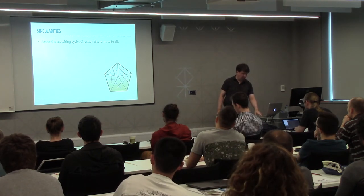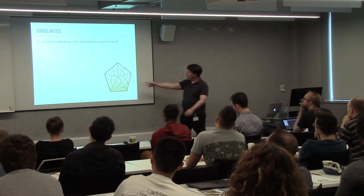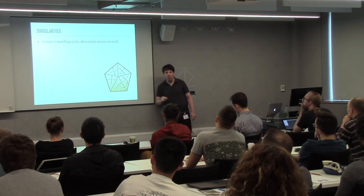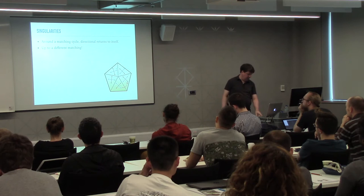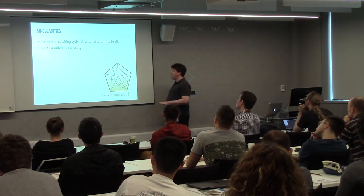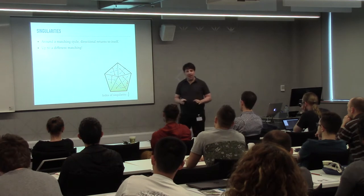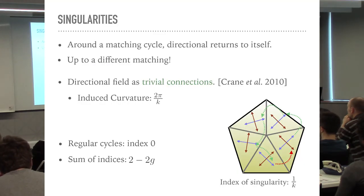Here was one example: blue to blue, blue to blue, and then suddenly I reached a different vector than the one I began with. The rest subsequently end up at a different matching. In this case I call the cycle singular, and how many clicks I went left or right is the index of singularity.